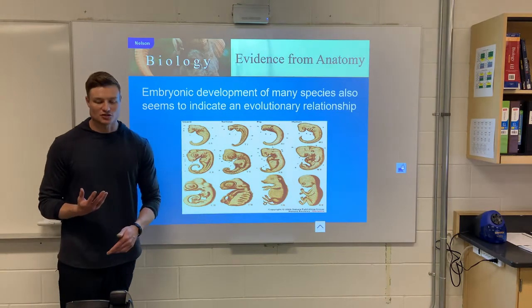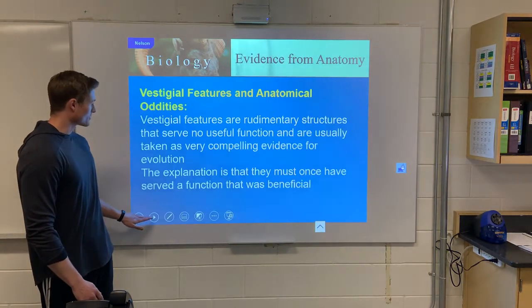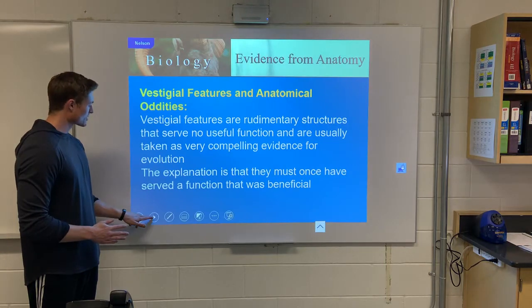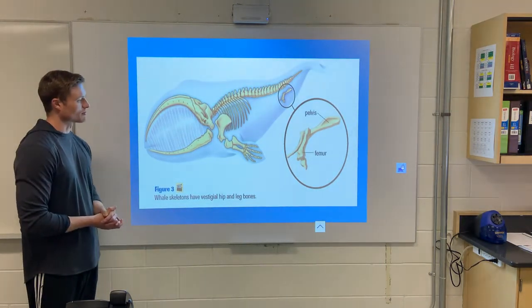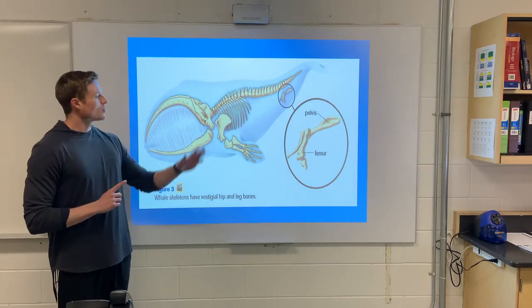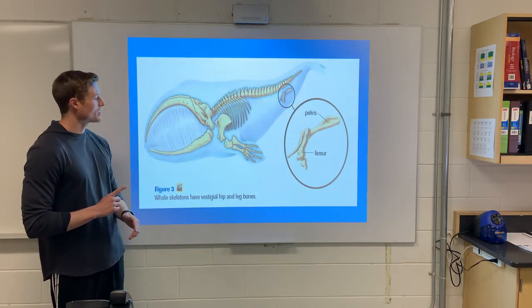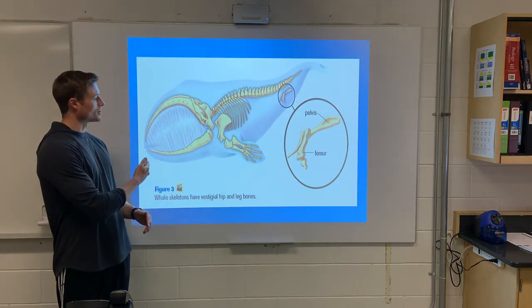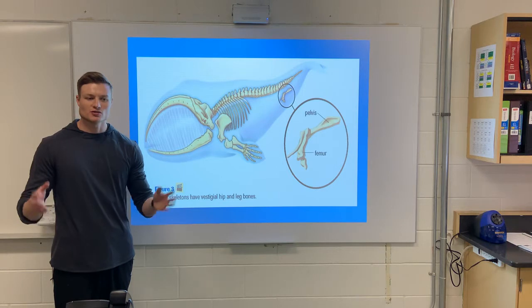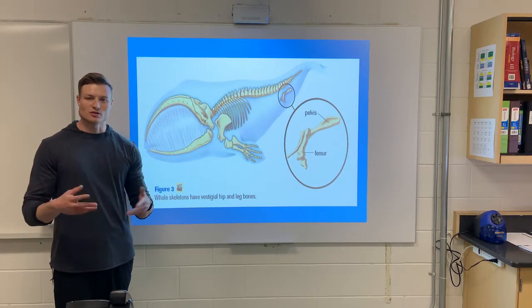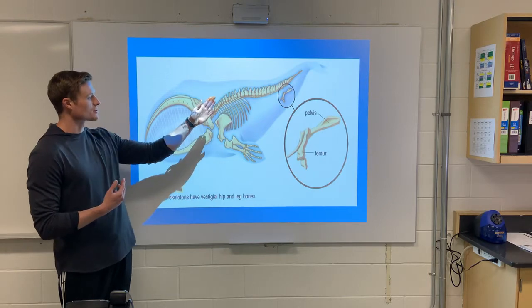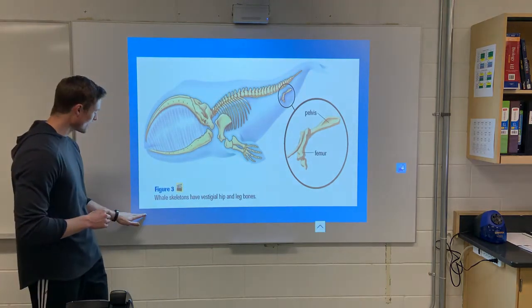Another feature we can look at is a vestigial feature — a feature that seems to serve no purpose. For example, whales have a pelvis and a femur bone. Why would a whale have that? However, looking back through time, an ancestor of the whale may have had rear flippers. Over time, those flippers became unnecessary, getting smaller and smaller. Through evolution the whale no longer needed them, but couldn't fully remove the femur and pelvis — so they're still there, just very small.